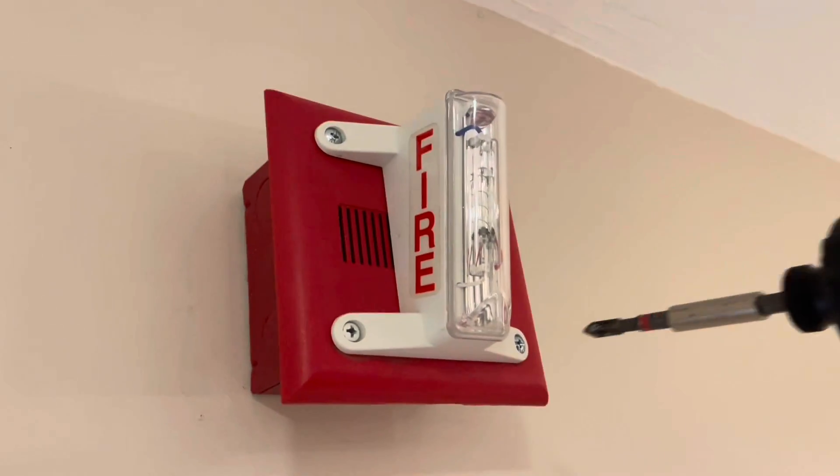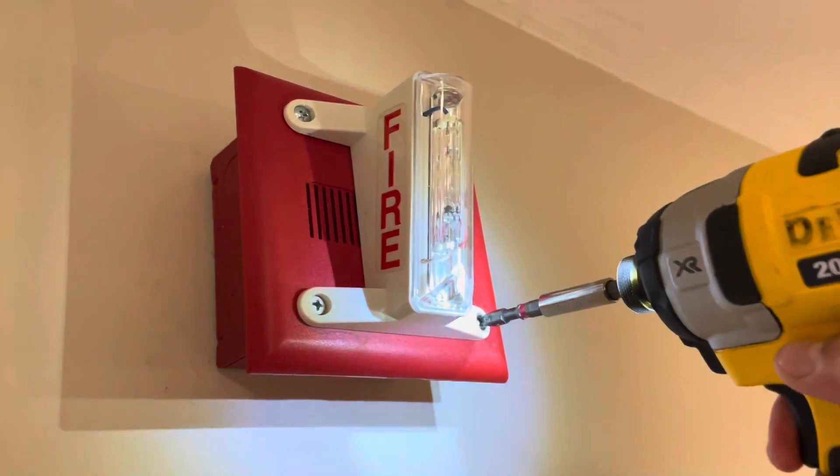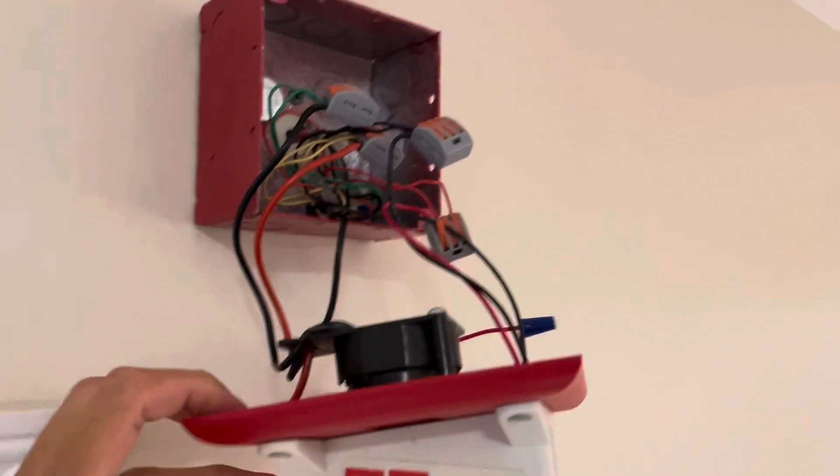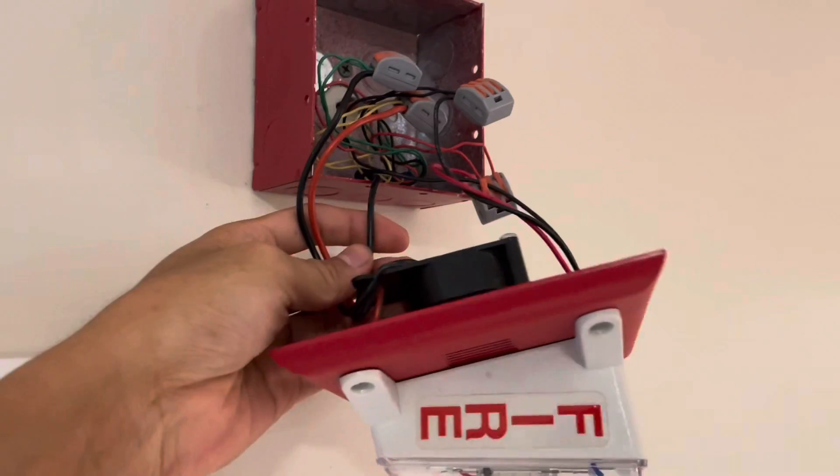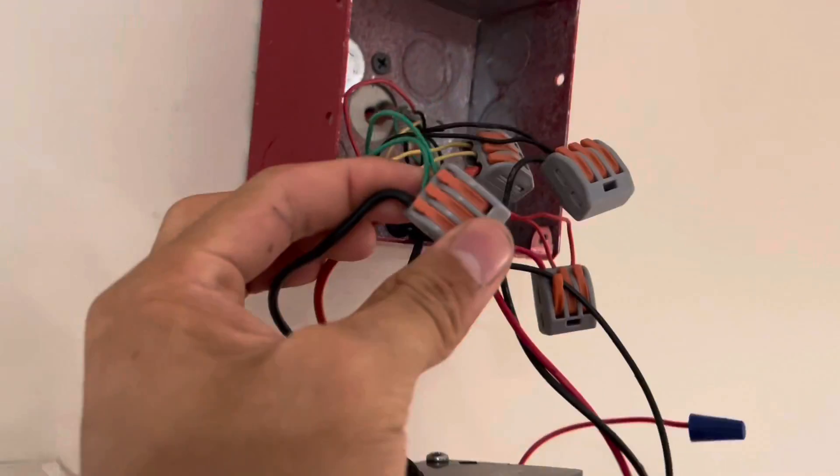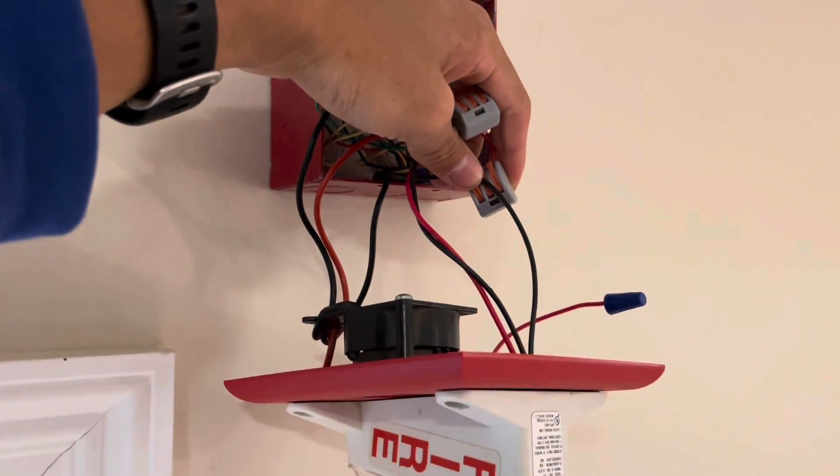Let me go ahead and just start by removing the old devices. So these were a nightmare to wire because both the horn and strobe have four pigtails but it's pretty simple actually. I just use these Wago connectors so all I have to do is just pull these out.